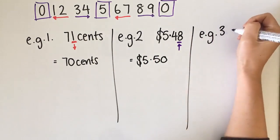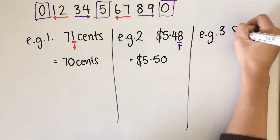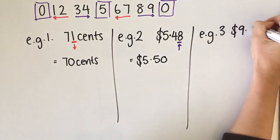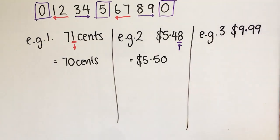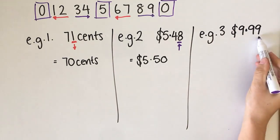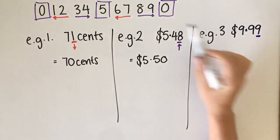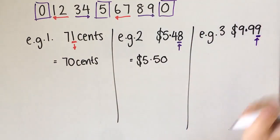The last one that we're going to do is nine dollars and ninety nine cents. You would have seen things like this in the shops. They do this to try and make things look cheaper than what they are. So we're looking at this end nine here. The nine tells us that we need to go up.